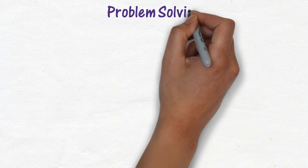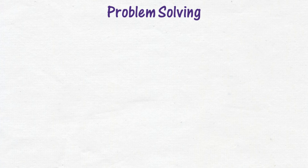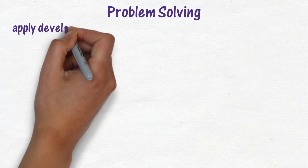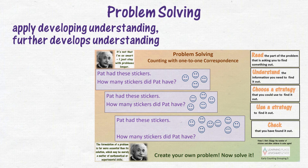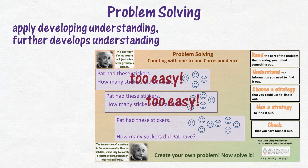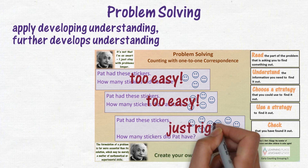In problem solving, children use their current understanding to investigate solving a problem. Problem solving provides opportunities for children to apply their developing understanding and further develops that understanding. Problems can be easily differentiated to suit the levels of understanding of your students. Children may be directed to the level of the problem by the teacher, or they could look at the levels and select the one at their current level. If one level is too easy, they look at the next level, until they find and solve the problem at their current understanding.